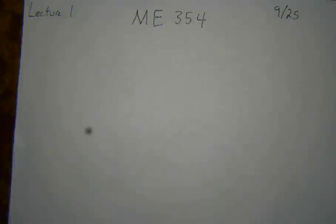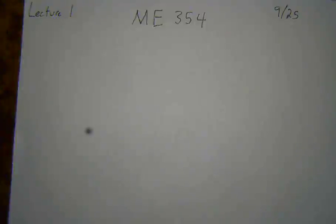You'll be getting material properties from data sheets, but it's still important to know — when you see a property in a data sheet — what that property means and how to get a precise number. Like, what does it mean that aluminum has a Young's modulus of 70 GPa? How did they get that? How correct is that? What margin of error is there? This is the kind of critical thinking I hope you're able to develop by the end of the course.